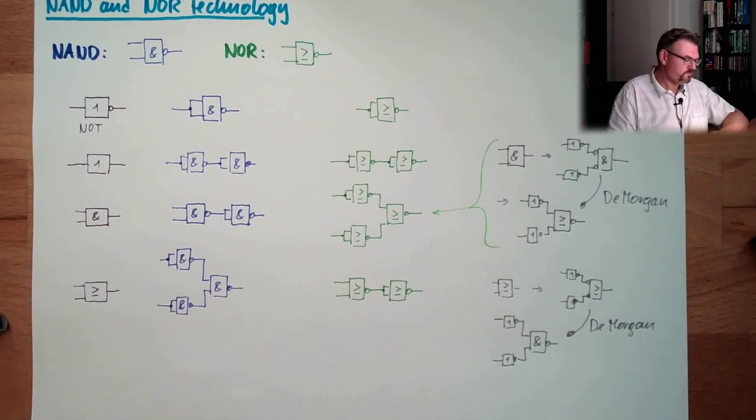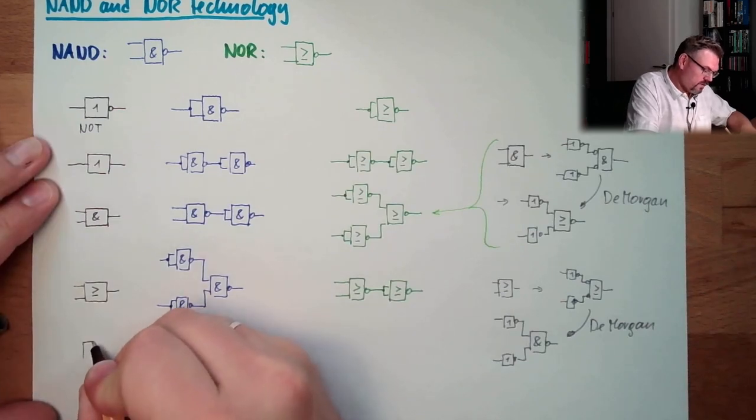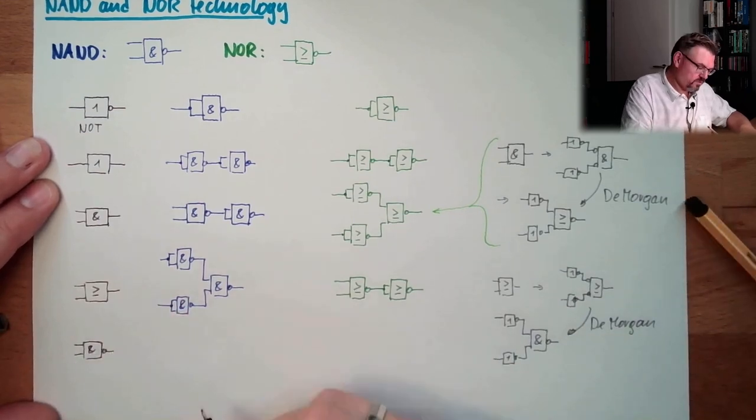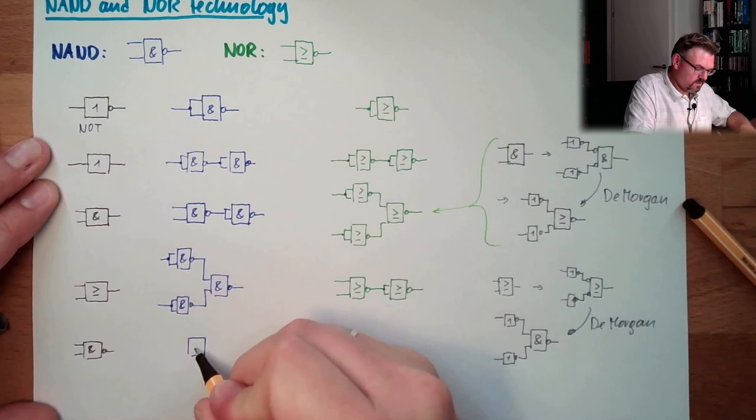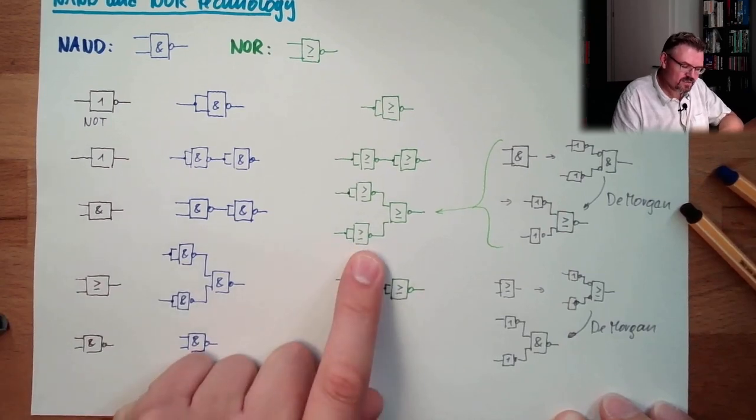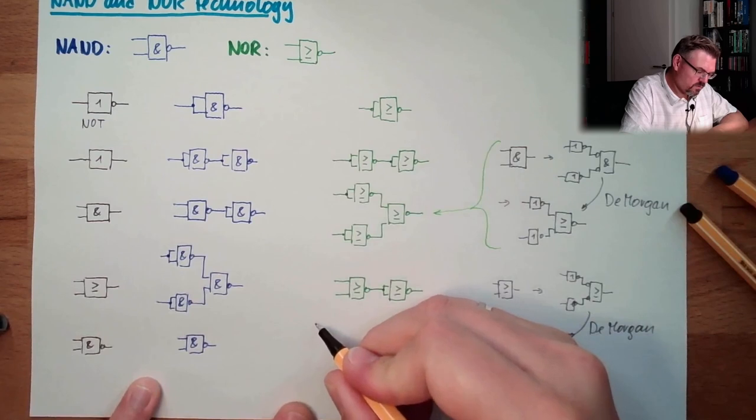Now, let's have a short look at a NOR or a NAND. A NAND in NAND technology, it's easy, it's a NAND. I don't have to change anything. And a NAND in NOR technology is exactly this, but with an additional NOT at the end.